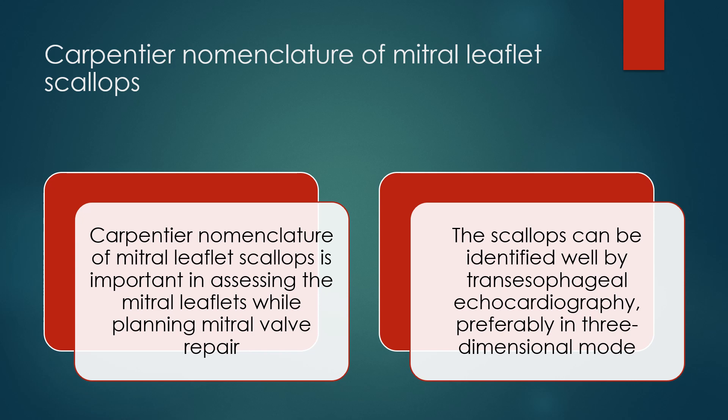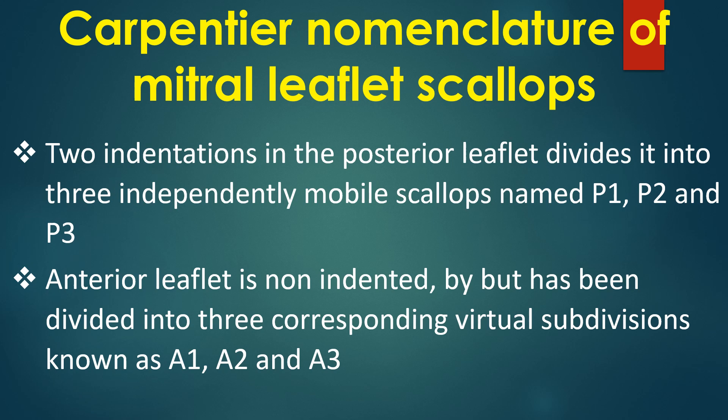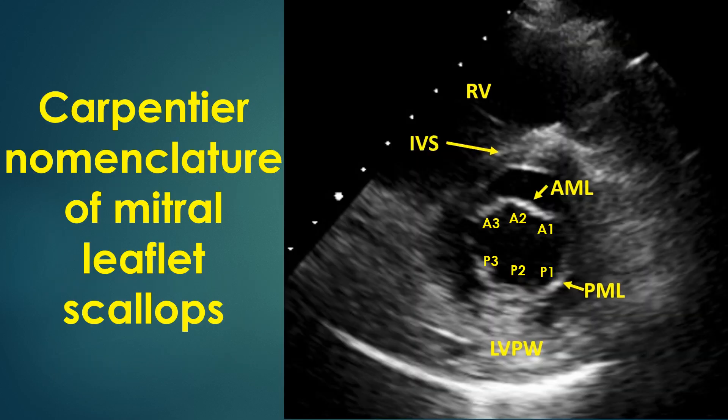Carpentier nomenclature of mitral leaflet scallops is important in assessing the mitral leaflets while planning mitral valve repair. The scallops can be identified well by transesophageal echocardiography, preferably in three-dimensional mode. Two indentations in the posterior leaflet divide it into three independently mobile scallops named P1, P2 and P3. The anterior leaflet is non-indented but has been divided into three corresponding virtual subdivisions known as A1, A2 and A3.